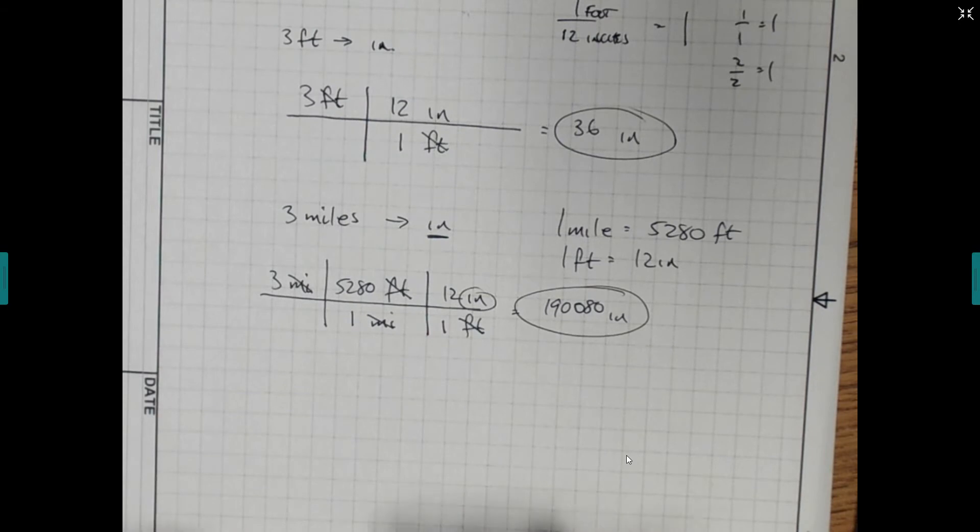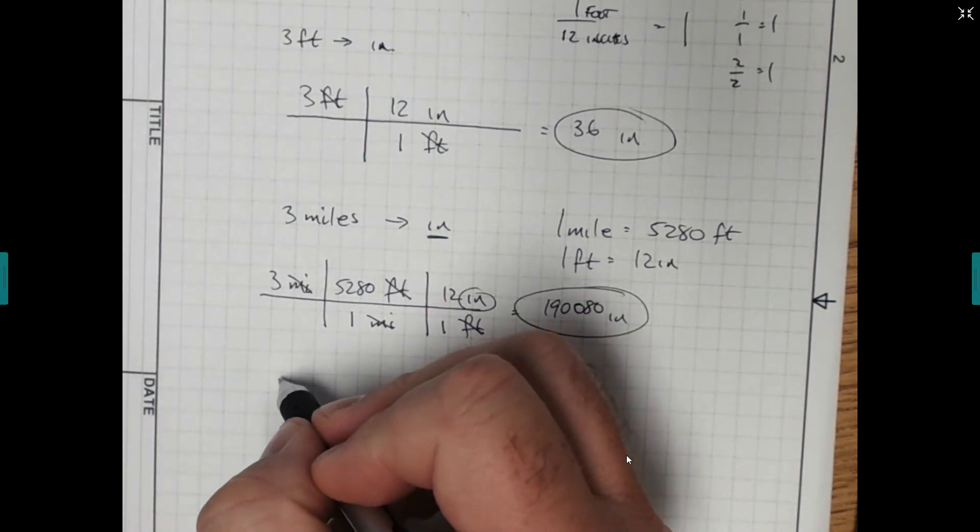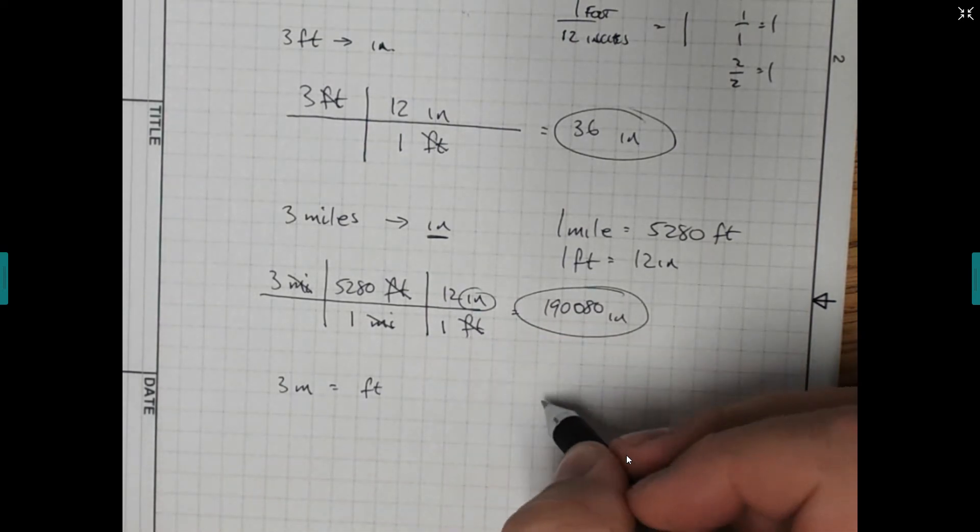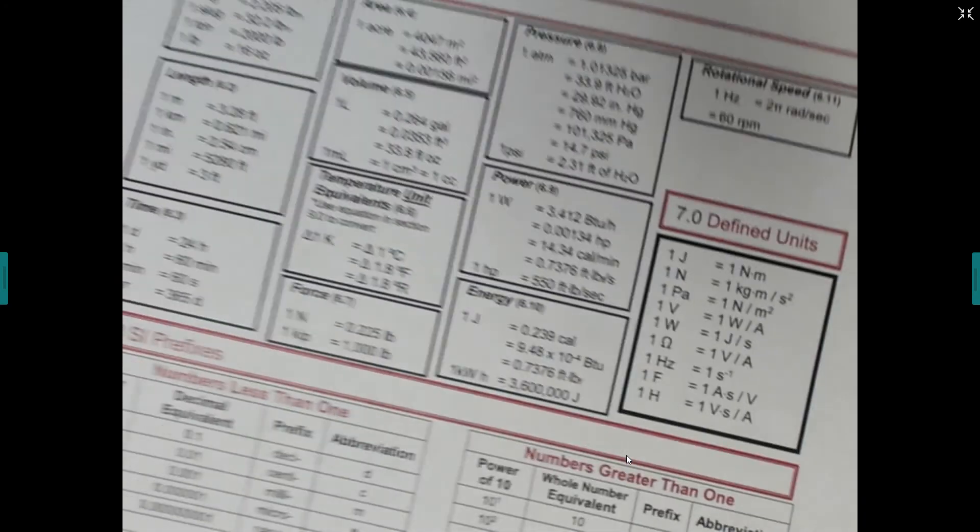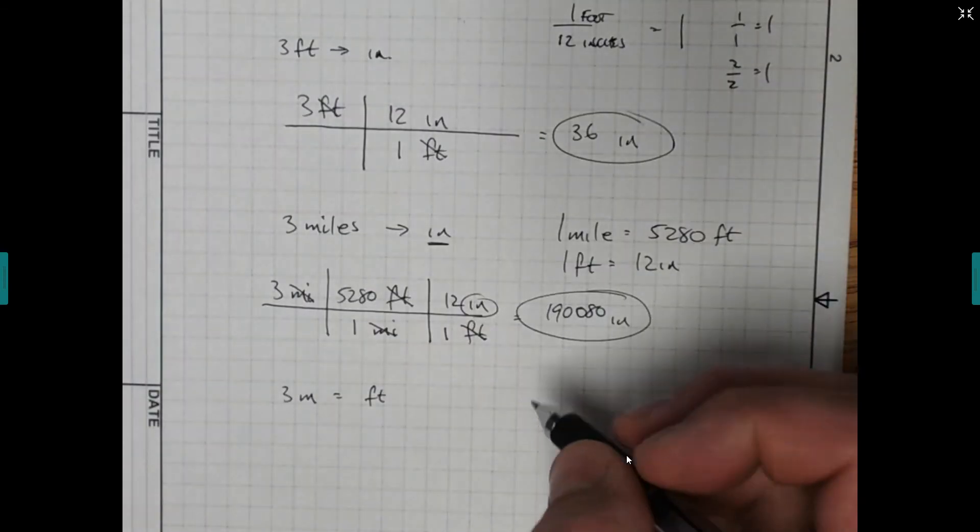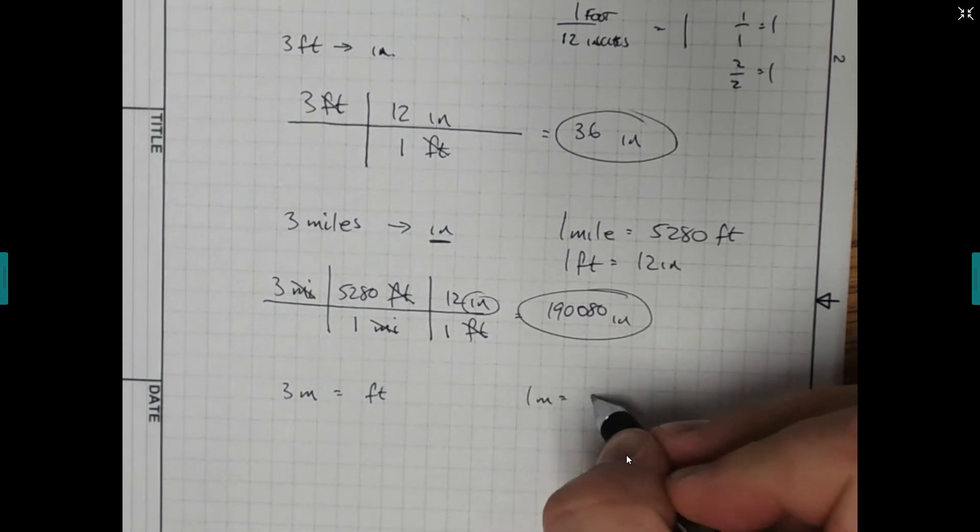It works the same as if you're going from meters to feet. Let's say we wanted to go with 3 meters, and we want to know how many feet that is. So we look at our equalities again. We're going from metric to English. 1 meter is 3.28 feet.